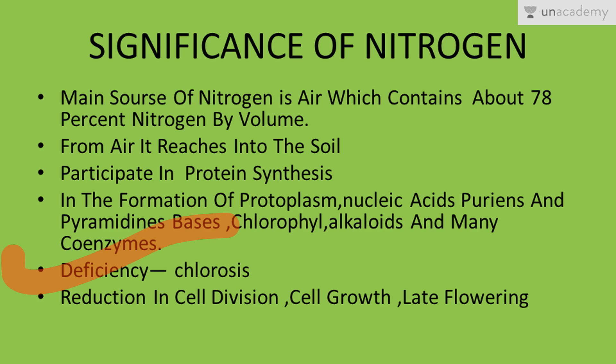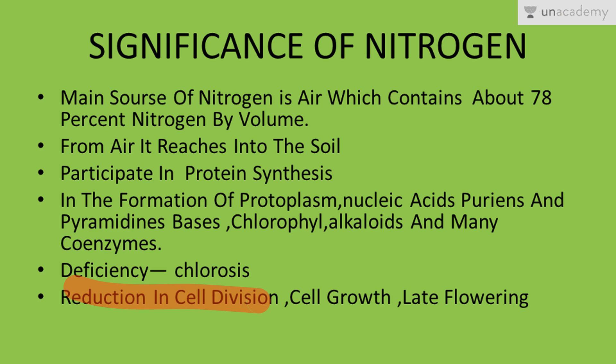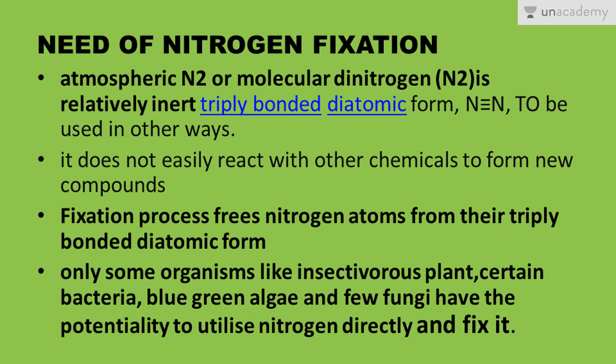Nitrogen deficiency may lead to chlorosis and also to a reduction in cell division and cell growth, ultimately resulting in reduced plant growth. Late flowering may also occur, along with many other complications.